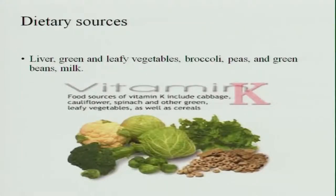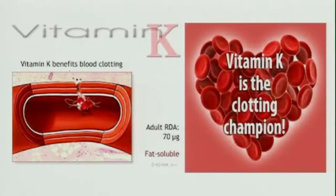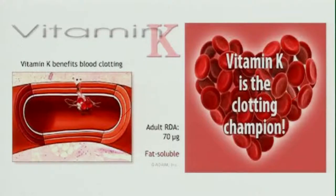Dietary sources of vitamin K include liver, green leafy vegetables, broccoli, peas, green beans, and milk. Vitamin K is widely available in vegetables. Vitamin K is called the clotting champion because it is very important for blood clotting — it converts prothrombin into thrombin, which is required for blood clotting.